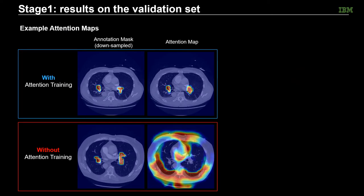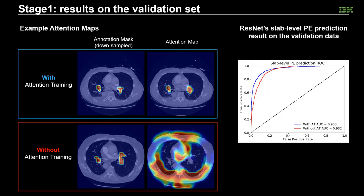Here are the results on the validation set. We first show some example attention maps. As can be seen, the attention maps produced by the network with attention training are more localized and in strong agreement with the annotation masks produced by the radiologists. On the other hand, the attention maps produced by the network without attention training are widely distributed and mostly focused on irrelevant regions where no PE is present. On the right side, we show the ROC curves on the validation set. The network trained with attention supervision clearly outperformed the one without attention training. Note that even without attention training, the network still obtained pretty good PE prediction accuracy on the validation set, most likely due to overfitting, even though the network's attention was clearly not focused on the PE regions.